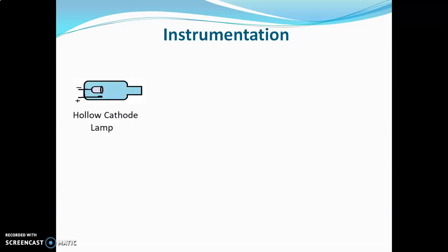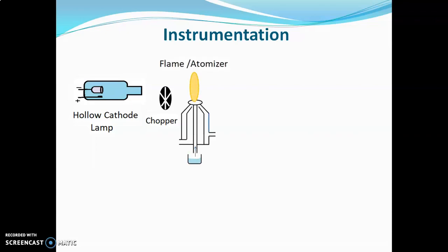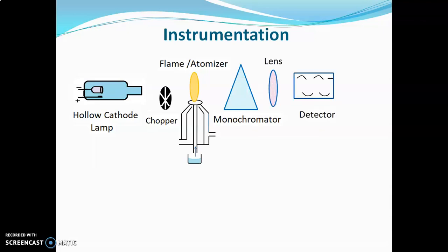The first part of AAS is the radiation source. The commonly used radiation source is the hollow cathode lamp, which emits line spectra. Next to the radiation source there is a chopper — a rotating wheel which breaks the light coming from the radiation source and produces intermittent light. Next is the atomizer. The commonly used atomizer is the flame atomizer, which produces gaseous metal atoms. A monochromator is present next to the atomizer, followed by a focusing lens, and finally a detector and readout system.